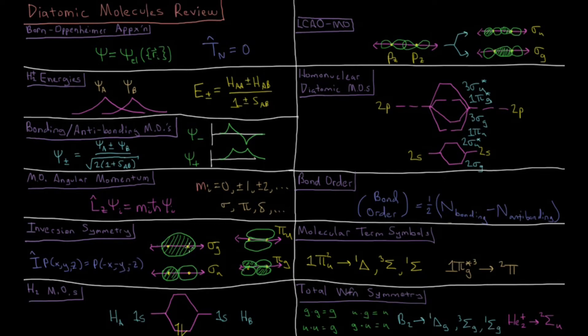If you are symmetric with respect to inversion, you are gerade or g. If you are anti-symmetric, you are ungerade or u. You can have sigma g, sigma u orbitals, and you can have pi g and pi u orbitals.